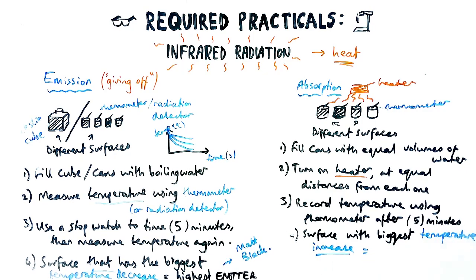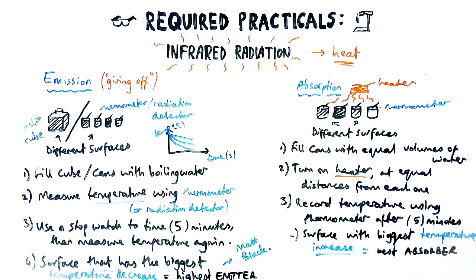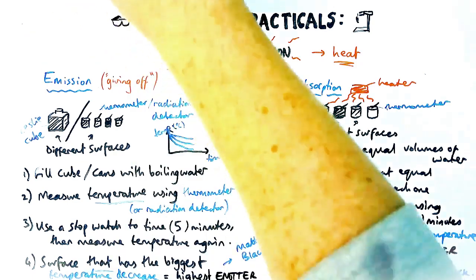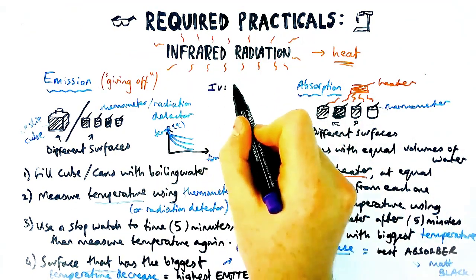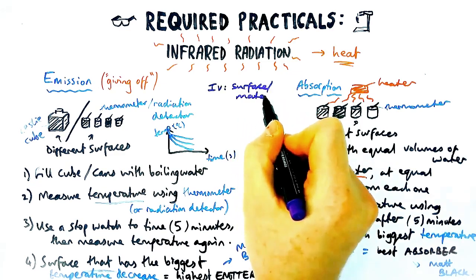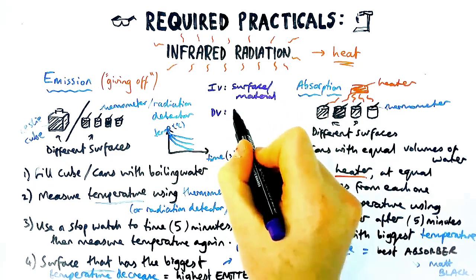You look at the surface with the biggest change in temperature — this time it's an increase, because it's absorbing radiation. The biggest temperature increase indicates the best absorber of infrared radiation — the one that takes in the most. We should find that's matte black: it should be the best emitter as well as the best absorber, whereas shiny light surfaces are the worst in both categories.